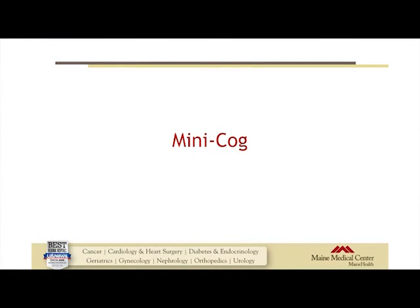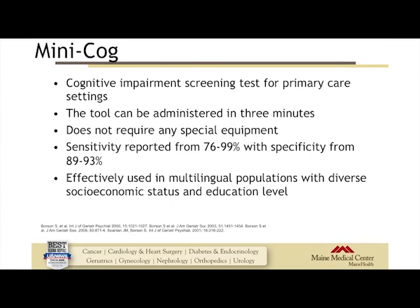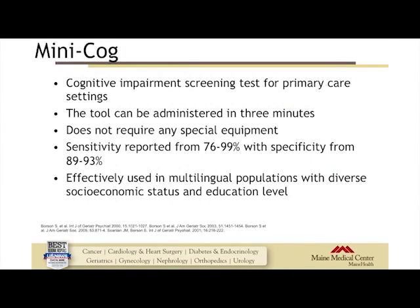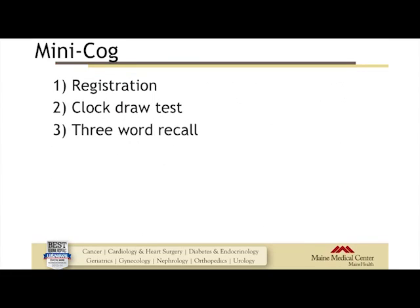Assuming the patient has passed screening for delirium, let's discuss the Mini-COG. It's a cognitive impairment screening test developed specifically for primary care settings. It can be administered in three minutes, requires only pen and paper, and has very good sensitivity and specificity — sensitivity between 76 and 99%, specificity from 89 to 93%. It's been shown to be effectively used in multilingual populations with diverse socioeconomic status and education levels. There are three parts: registration, a clock draw test, and three-word recall.